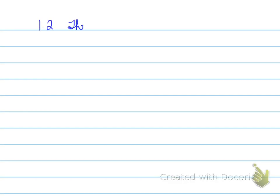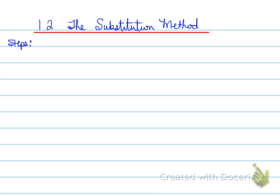Looking at section 1.2, the substitution method. In the substitution method, it's basically a four-step process. That process is known as isolate, sub, sub, check. And that's what you have to remember about substitution.